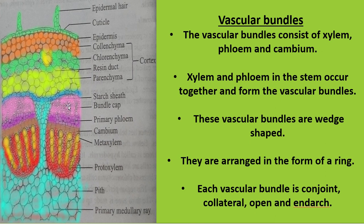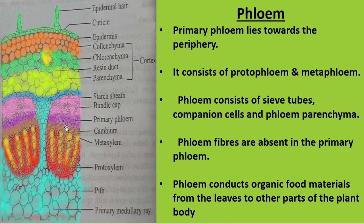In the picture, the bundle cap or hardbast is visible. Below it is the primary phloem, which is polygonal in shape, followed by the cambium cells. The phloem contains protophloem and metaphloem, and also contains sieve tubes, companion cells, and phloem parenchyma. Phloem fibers are completely absent in the primary phloem. Phloem transports food material from the leaves to other parts of the plant body.